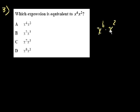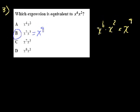Problem 3. They want to know which expression is equivalent to x to the sixth times x squared. When you're multiplying expressions with the same base, you add the exponents. So that is x to the sixth plus 2, which is x to the eighth. That's not one of the choices directly, so we look for which pair of exponents adds to 8. 5 plus 3 equals 8, so x to the fifth times x to the third equals x to the eighth as well. That is choice B.